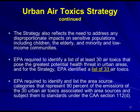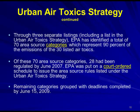EPA is required to identify a list of at least 30 air toxics that pose the greatest potential health threat in urban areas. For the strategy, EPA actually identified 33 such air toxics. EPA was required to identify and list the area source categories that represent 90% of the emissions of the 30 urban air toxics associated with area sources, and to subject them to standards under Section 112 of the Clean Air Act. Through three separate listings, EPA identified a total of 70 area source categories representing 90% of those emissions.